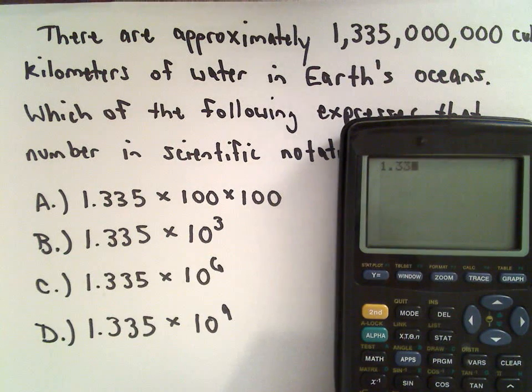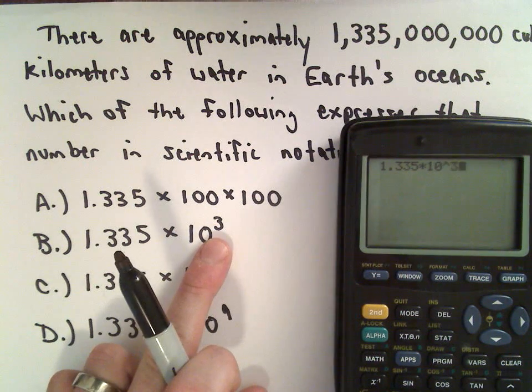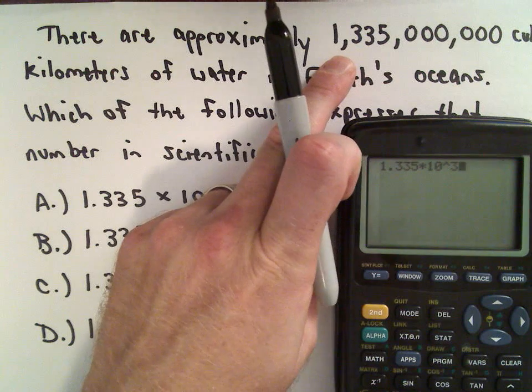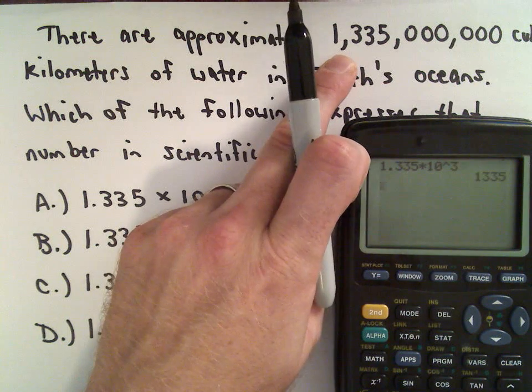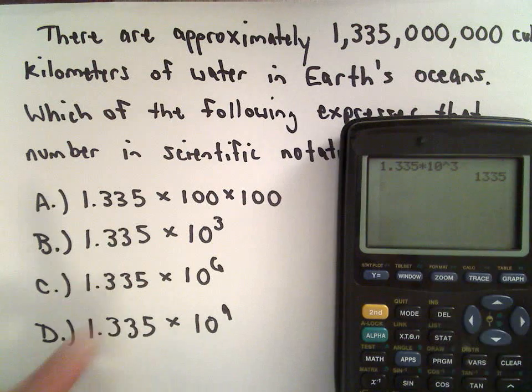So if I do 1.335 multiplied by 10 raised to the power of 3, I'm going to see if that gives me 1,335,000,000. No, it only gives you 1,335.